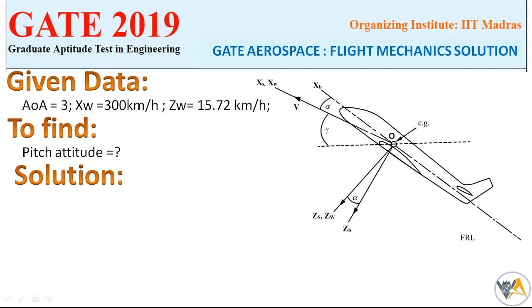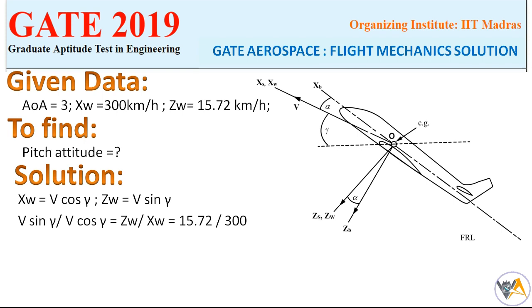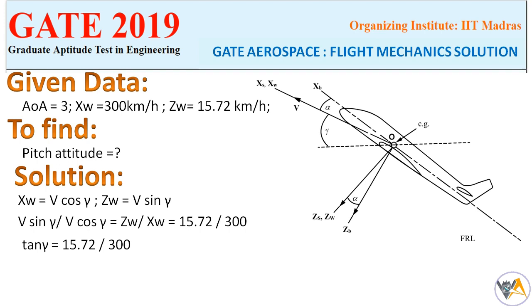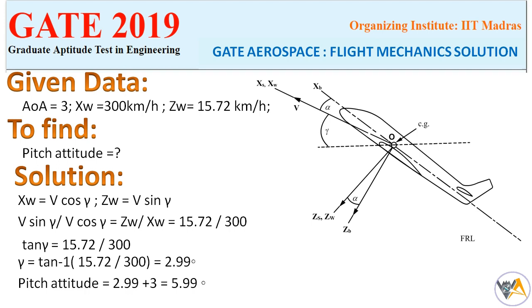We need to find the pitch attitude. First, finding the climb angle gamma: tan(γ) = zw / xw = 15.72 / 300. So gamma = tan⁻¹(15.72 / 300) = 2.99 degrees. The pitch angle is the sum of the climb angle and the angle of attack, so pitch attitude = 2.99 + 3.00 = 5.99 degrees, which is within the acceptable range.